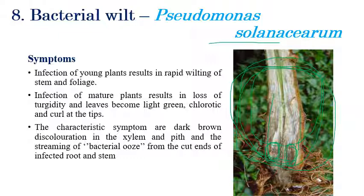Similar bacterial ooze-out can be seen in bacterial blight of rice when infected leaves or stems are dipped in water. In groundnut bacterial wilt, brown color discoloration can be seen in the root region when the xylem and pith are cut open. On the upper leaf region, light green or chlorotic patches and curling and tipping of leaves can be seen.